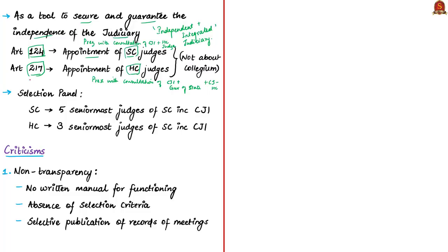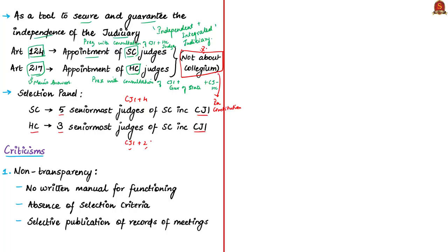Note that Article 124 and Article 217 are regarding the appointment of Supreme Court and High Court judges respectively. Importantly, the Collegium system is not mentioned anywhere in the Indian Constitution, not even in any of the amendments. In this Collegium system, the selection panel for Supreme Court judges contains the five senior most judges of the Supreme Court including the Chief Justice of India. The Chief Justice consults the four senior most judges and recommends names to the Law Ministry. For High Court judges, the selection panel contains three senior most judges of the Supreme Court including the Chief Justice of India, who consults the two other senior most judges.